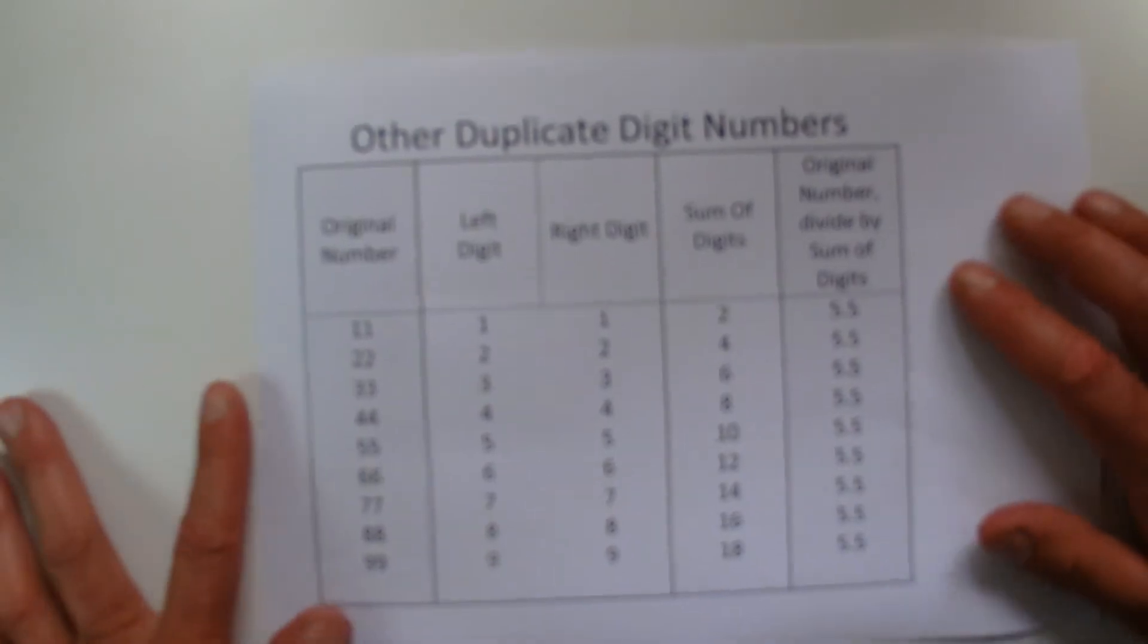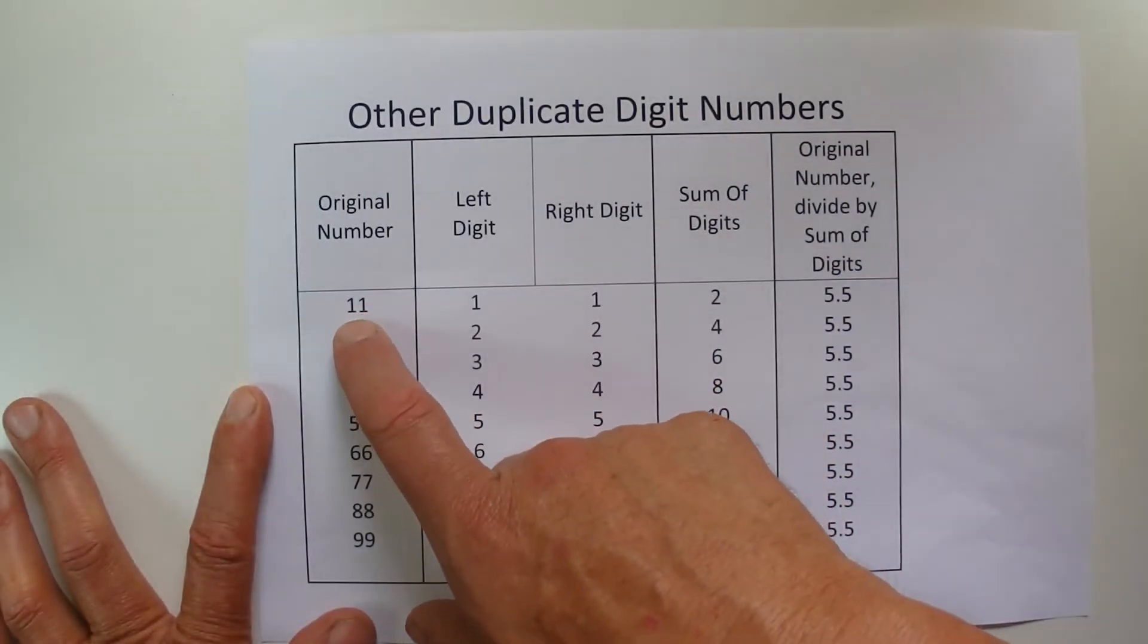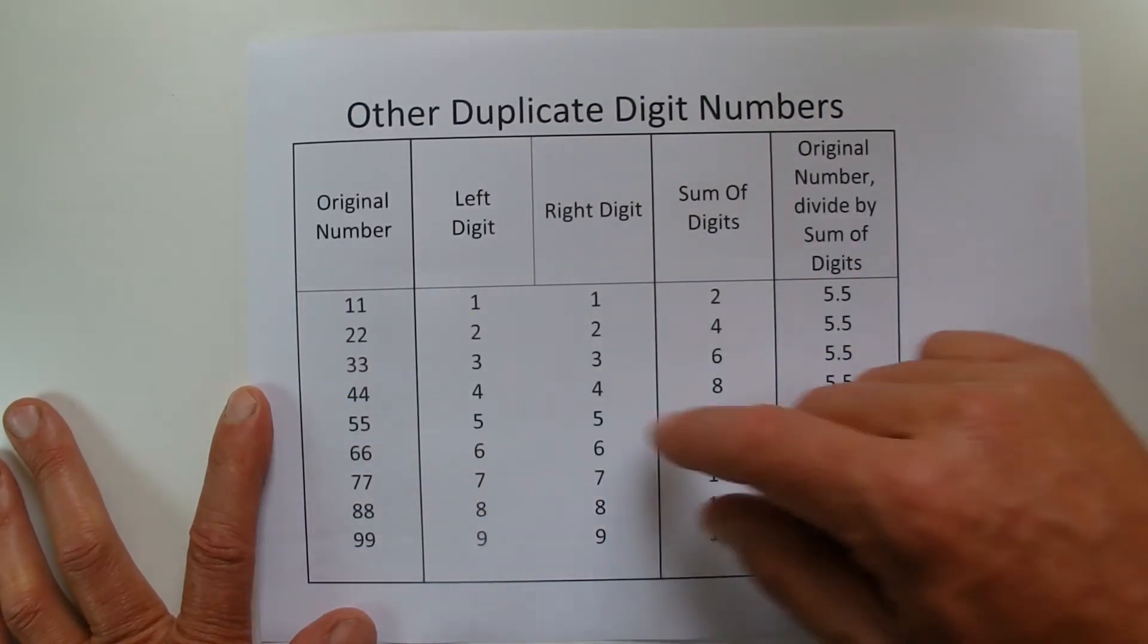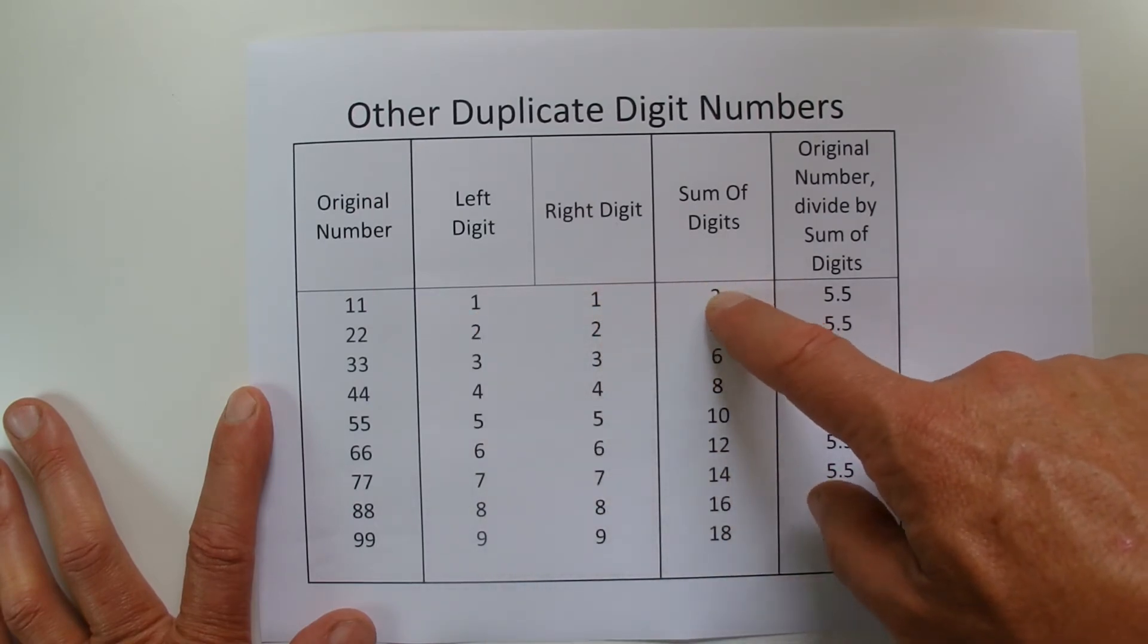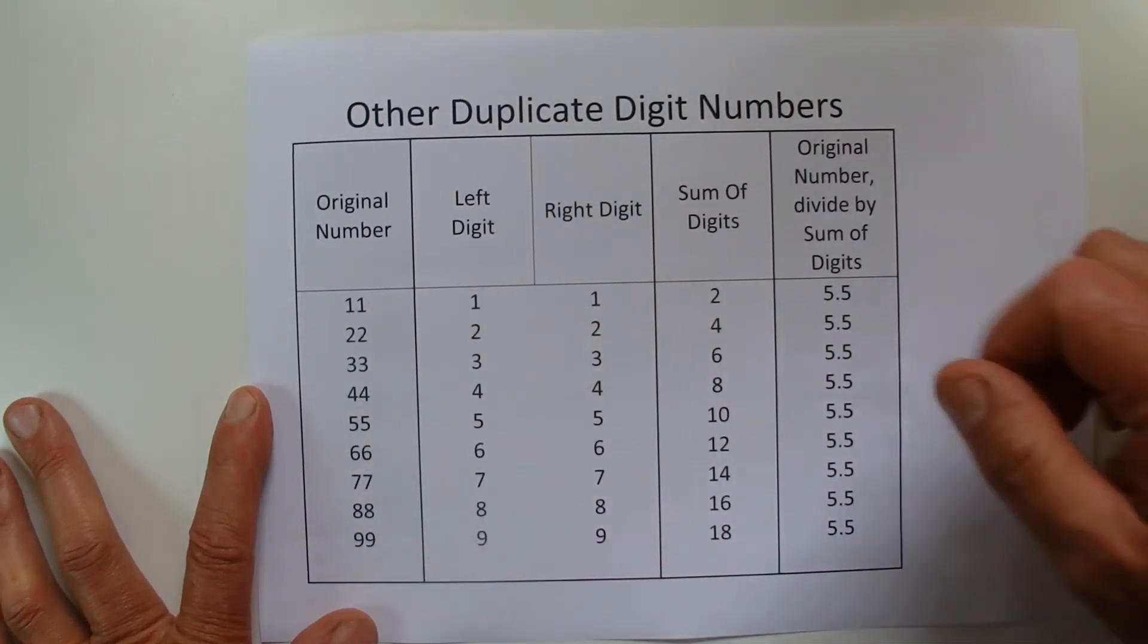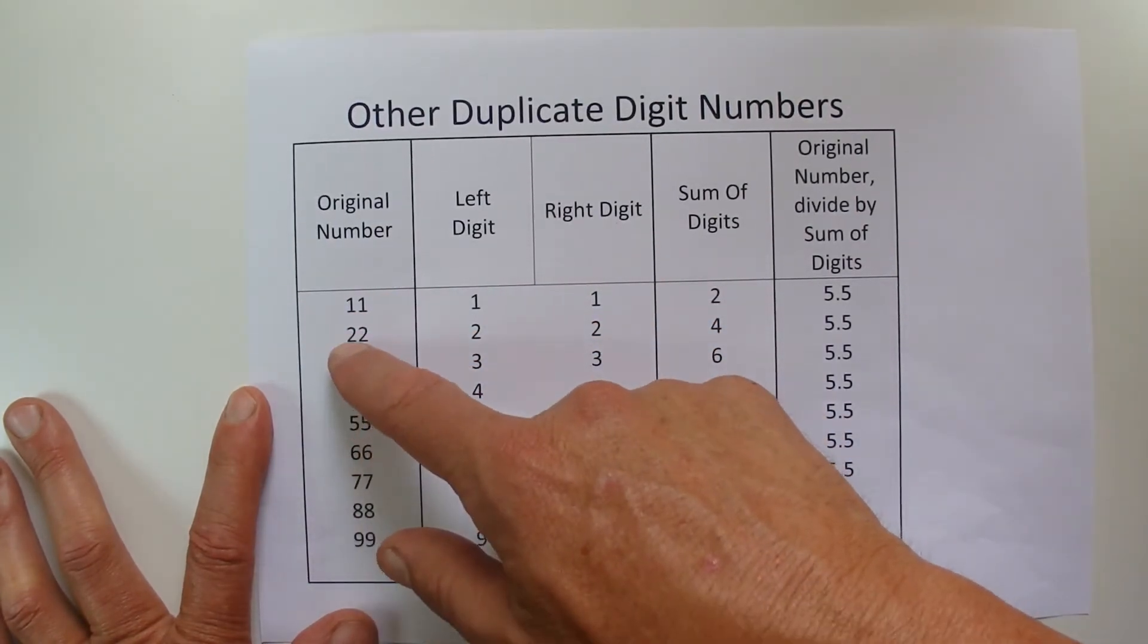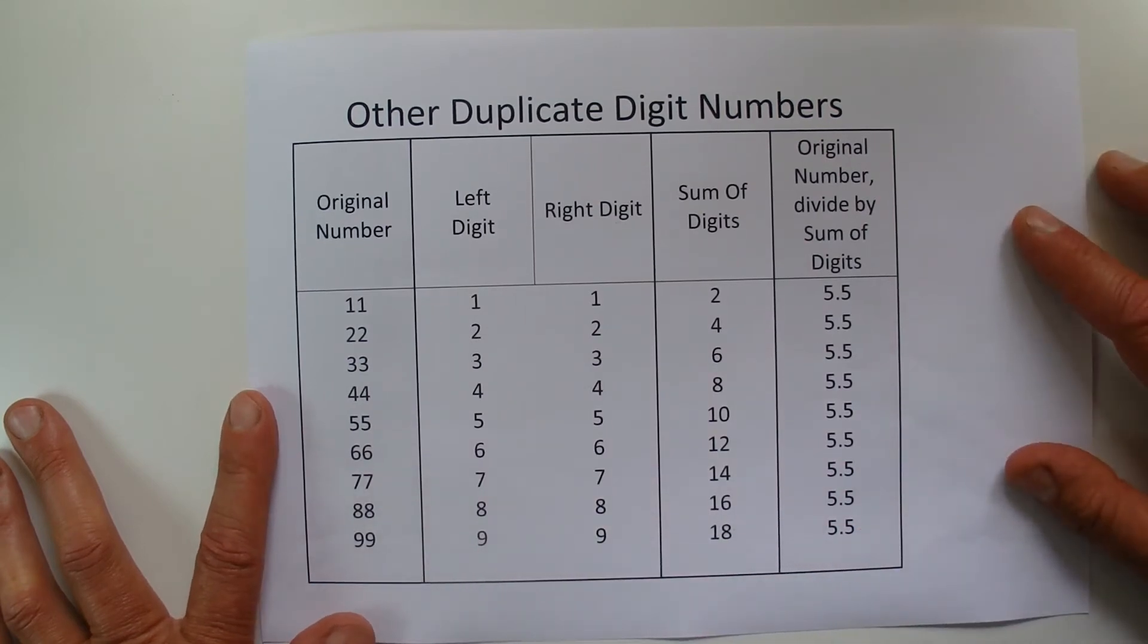And also then, this is the double duplicate digit numbers. So it's 11, 22, 33, right through to 99. And if you apply that same principle by adding up the two digits, which gives you 2, 11 is 2, and 11 divided by 2 is 5.5. So you get the same answer for all of those 10 numbers where the digits are both the same, and you get to 5.5.